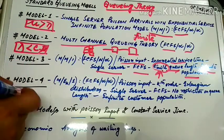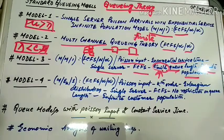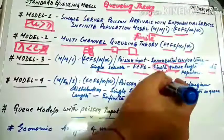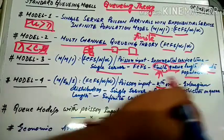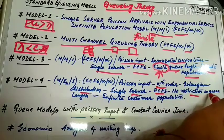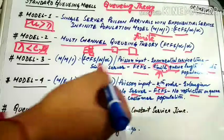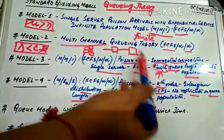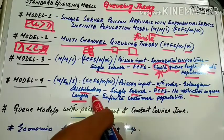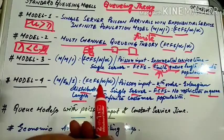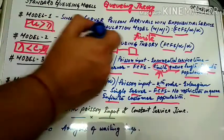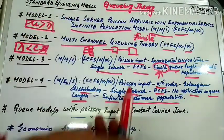Now model 4: Poisson input of kth order, Erlangian distribution, single server, FCFS, with no restriction on queue length — meaning infinite queue length — and infinite customer population. Model 1 also had infinite population, so models 1 and 4 share that characteristic.